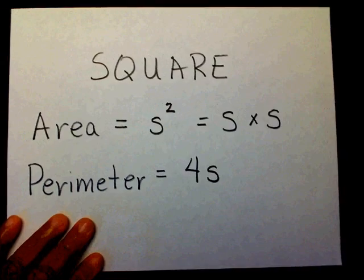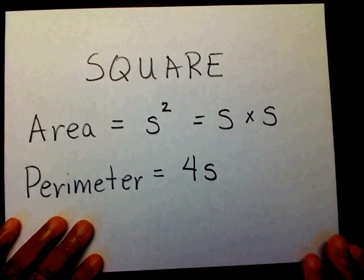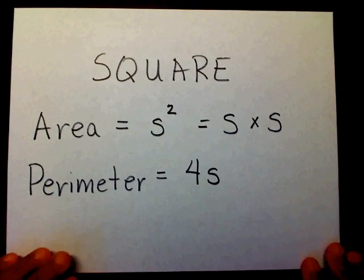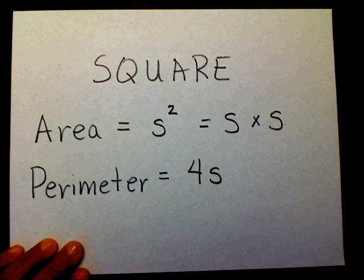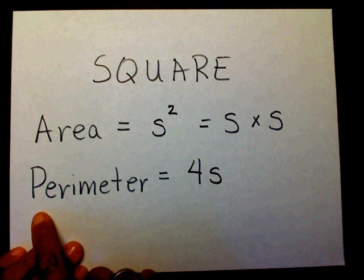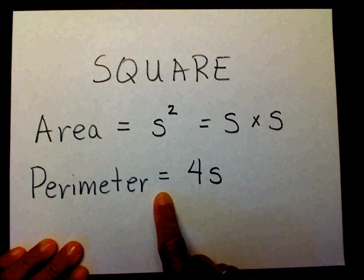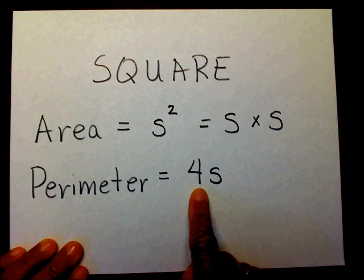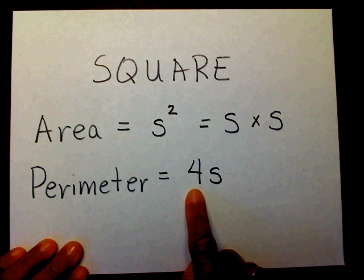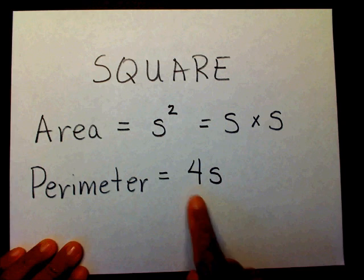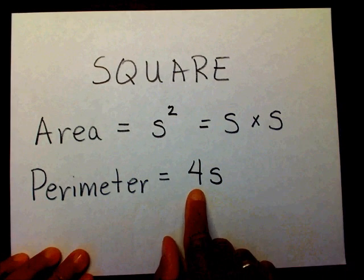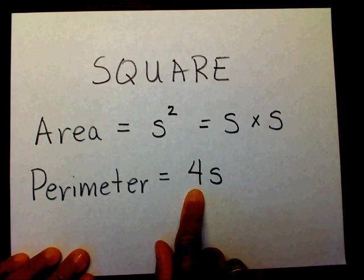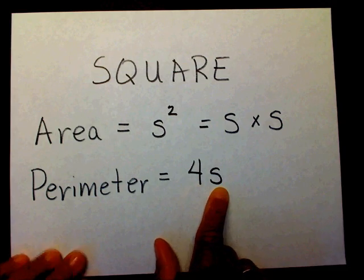In order to find a perimeter, you need a formula. To find the perimeter of a square, we're going to multiply the side times four. So the formula is: perimeter of a square equals four times the side.